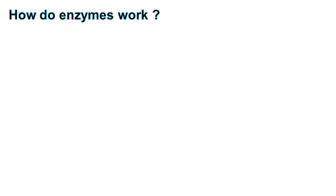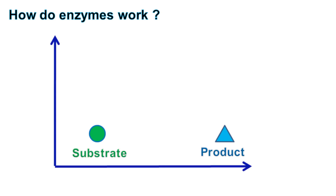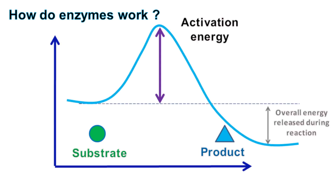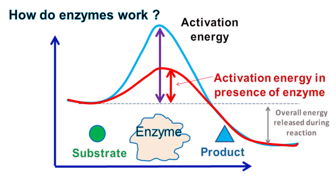How do enzymes work? In order to convert a substrate into a product, a certain amount of energy is required. This is called activation energy. Higher the activation energy, more difficult it is to convert a substrate into a product. What enzymes do is they decrease the activation energy for a particular reaction so that the conversion of substrate into a product can occur easily.